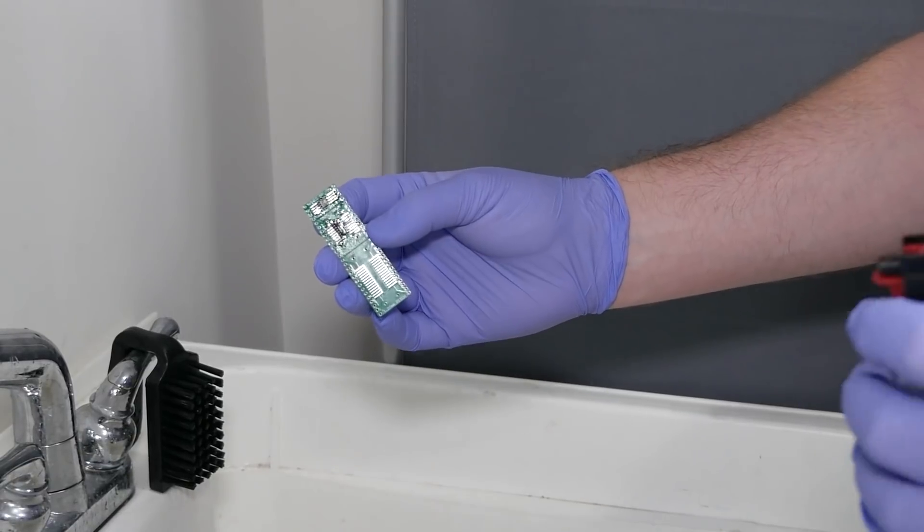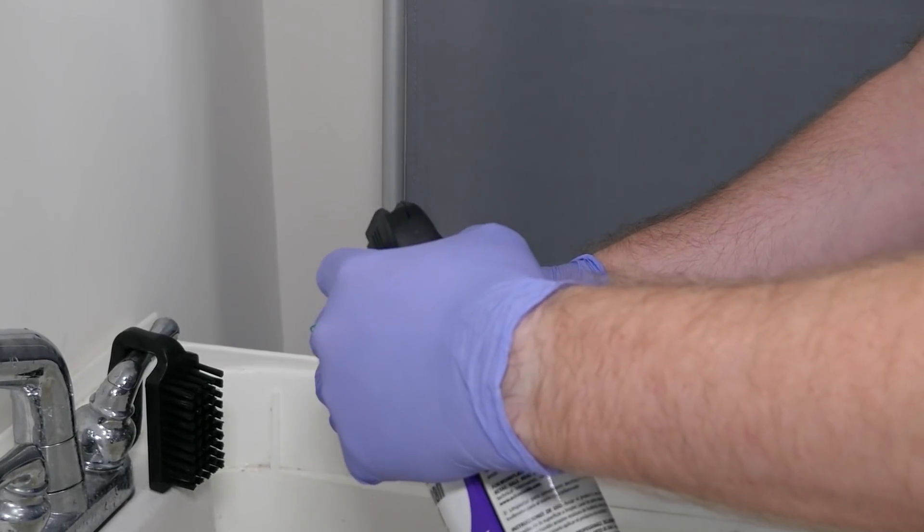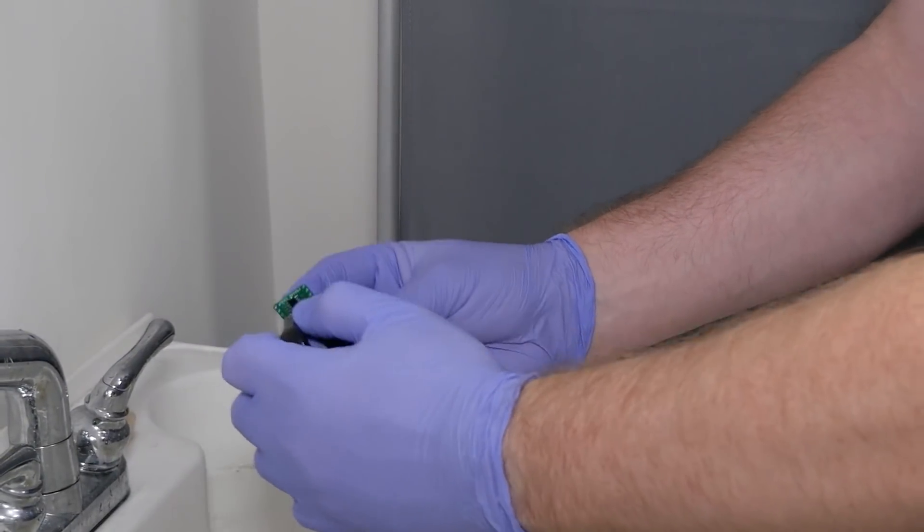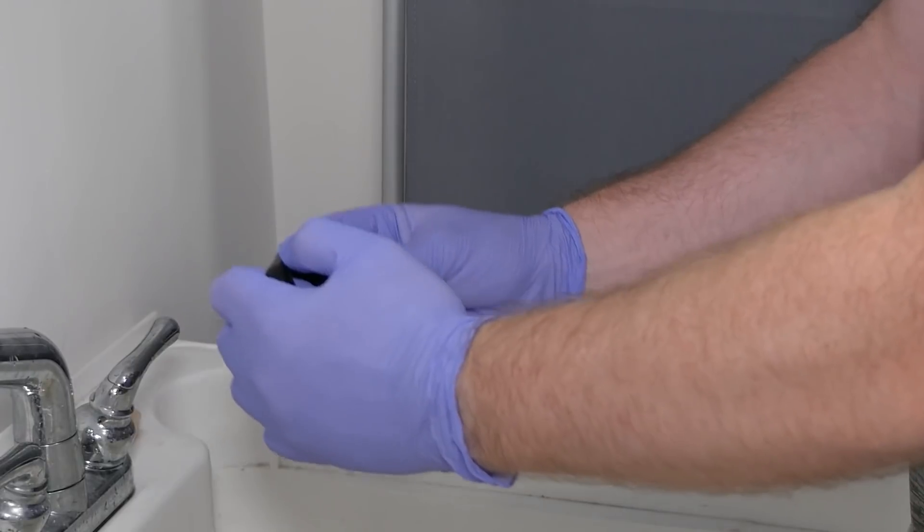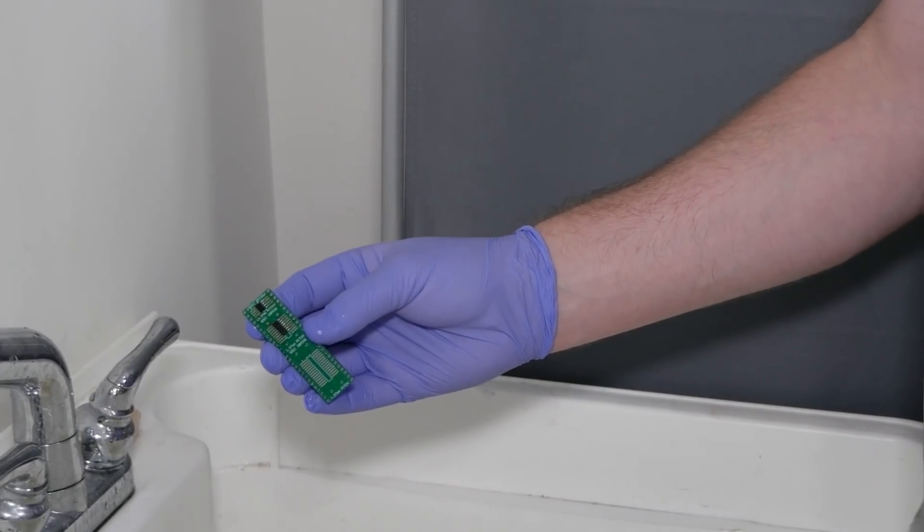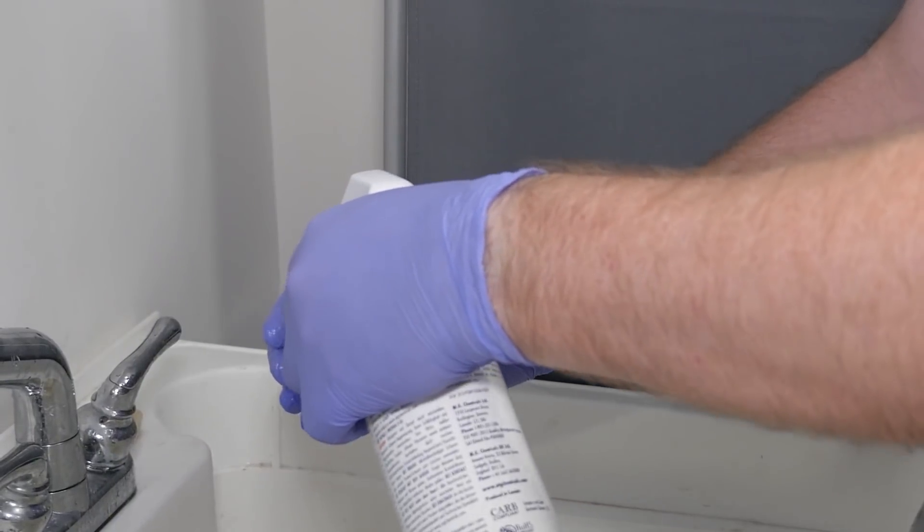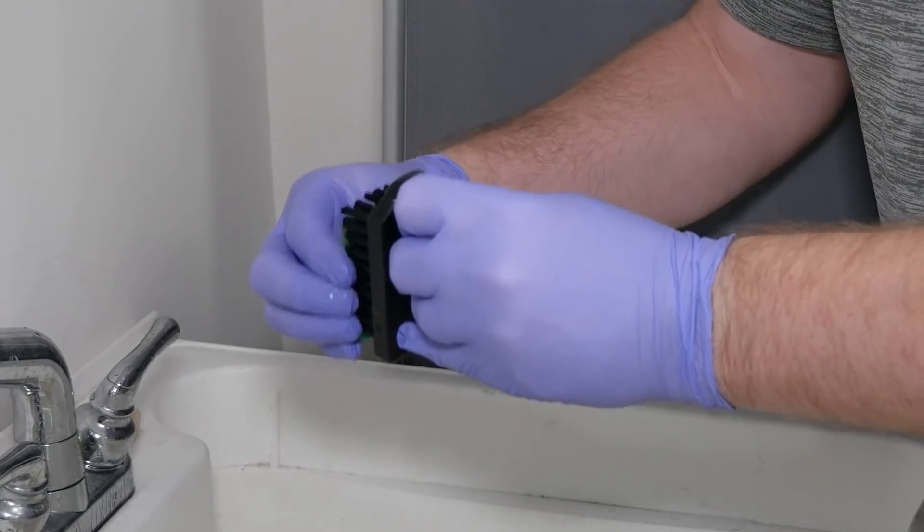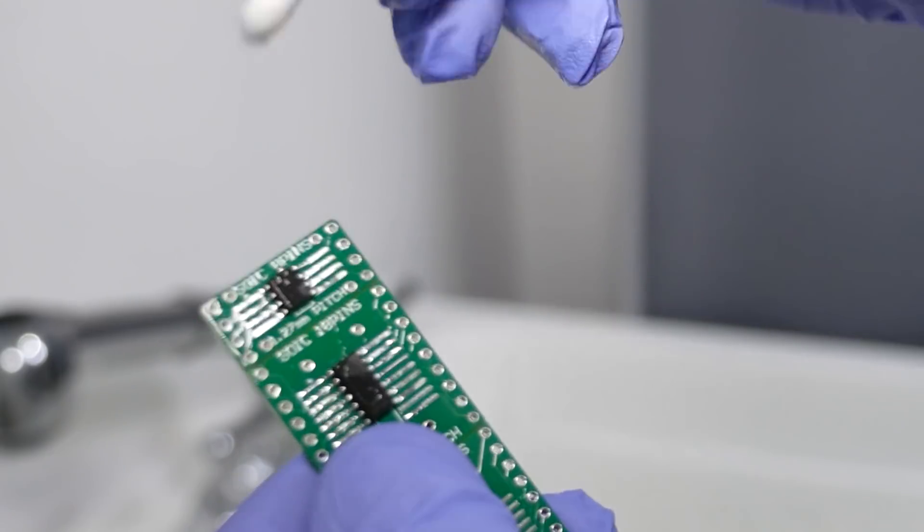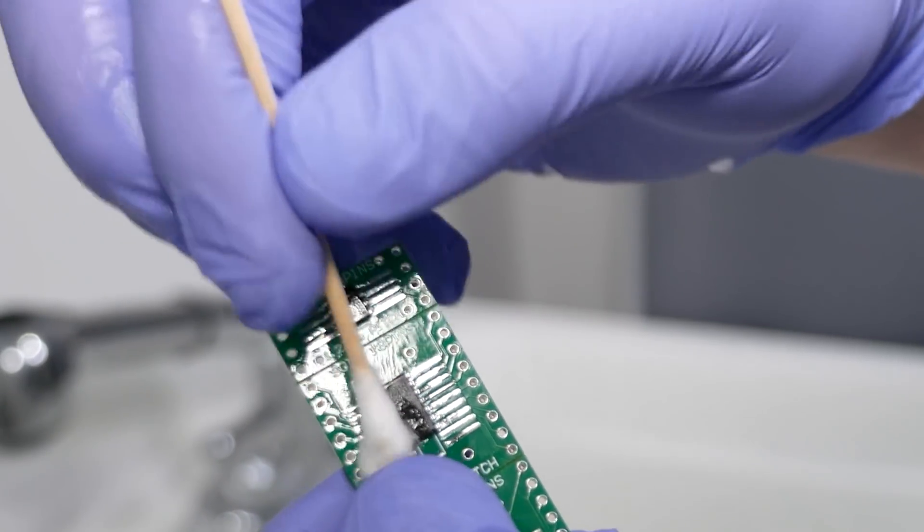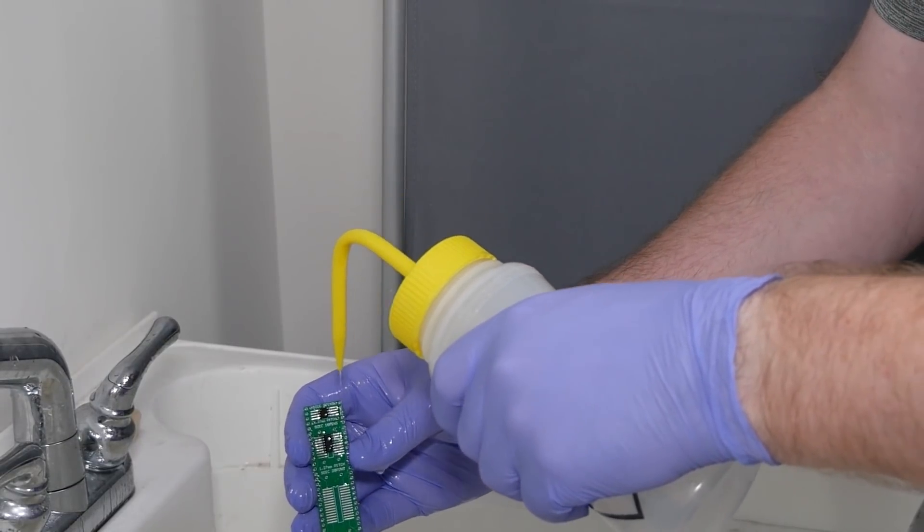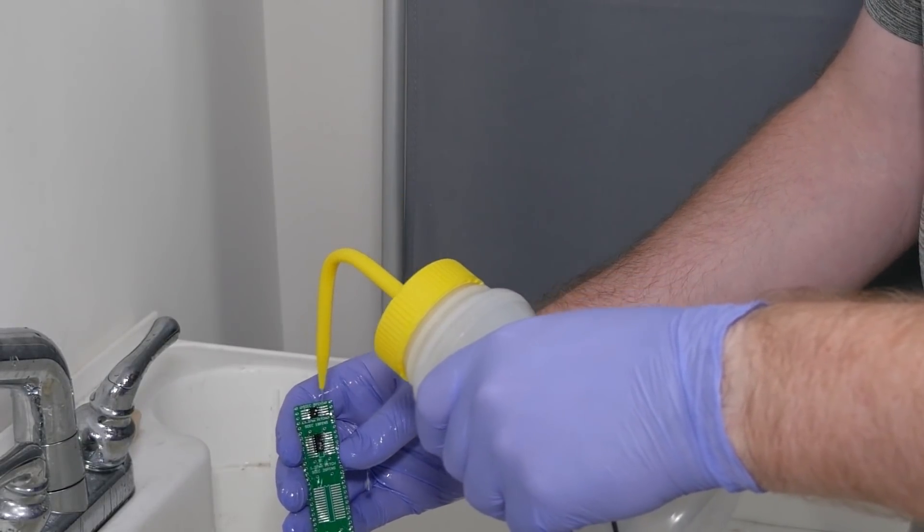First, we'll need some disposable nitrile gloves. I start the cleaning by using flux remover to break up the flux residue. Before it evaporates, I scrub it with an ESD safe brush. Next, I rinse with some isopropyl alcohol to wash off both the cleaner and the loosened residue. Sometimes I do another scrubbing pass, or I use cotton swabs on the really stubborn areas. At this point, it is just rinse and repeat with the IPA until the board is clean and not at all sticky.